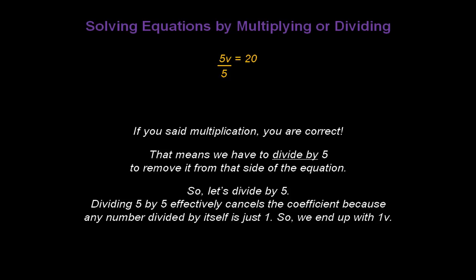Dividing 5 by itself effectively cancels that coefficient because any number divided by itself is just 1. So we end up with 1v. And 1 times v is just v, which is exactly what we want to have on the left side of the equation.